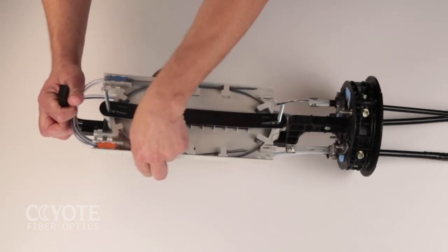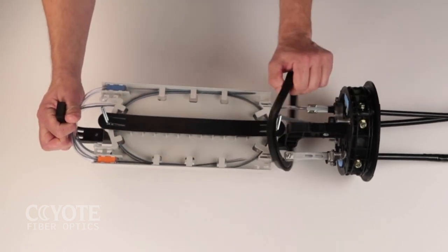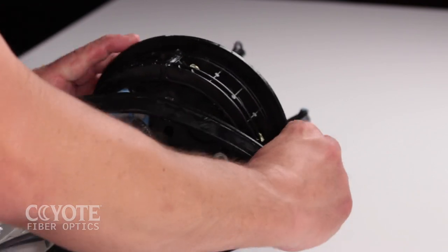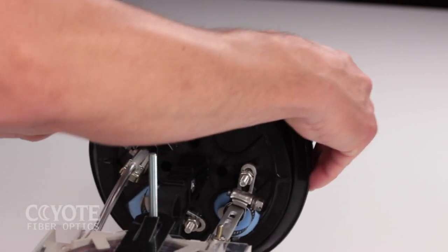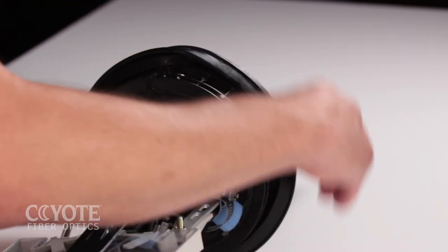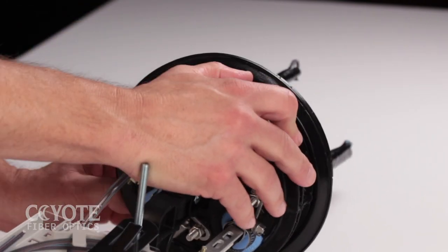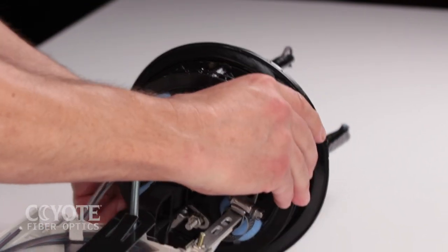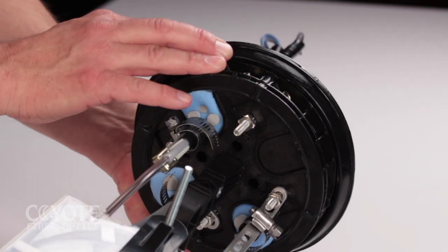Slide the end plate gasket onto the end plate and press it into the groove. Make sure the foot of the gasket is fully seated in the groove of the end plate. Work the gasket into the groove.